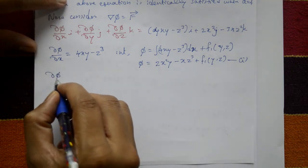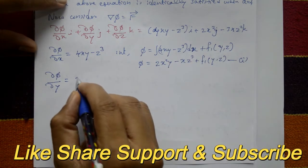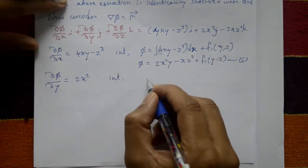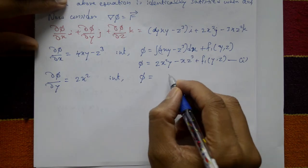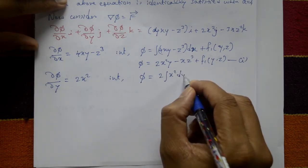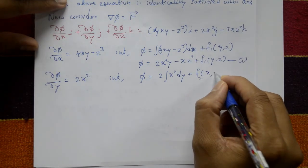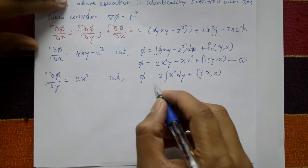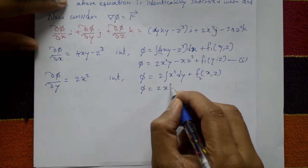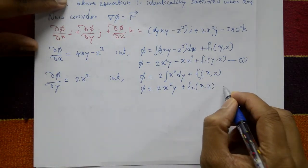Taking the coefficient of j on both sides: del phi/dy equals 2x squared. Integrating with respect to y: phi equals 2x squared y plus f2(x, z), where f2 is an arbitrary function. This is equation number 2.